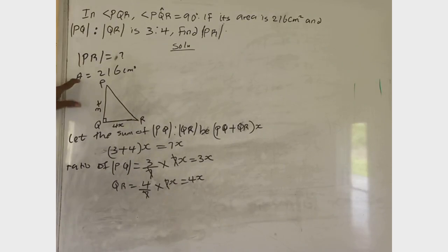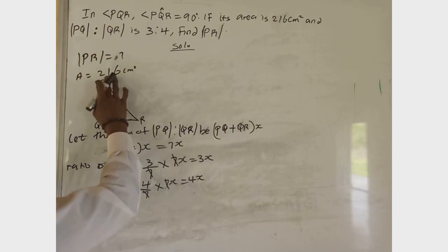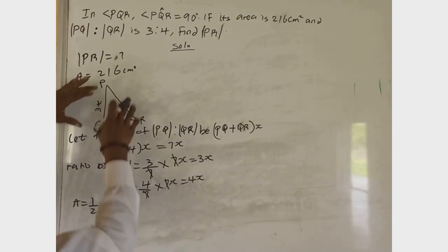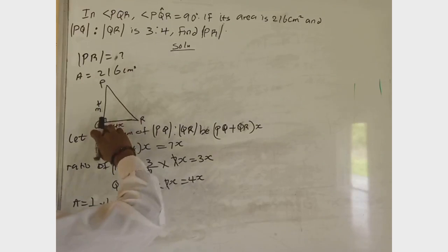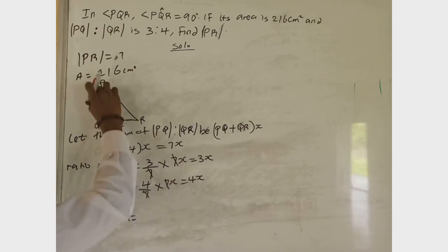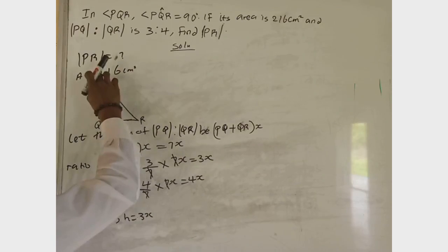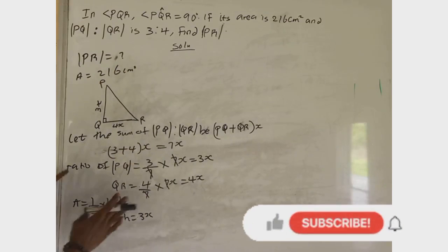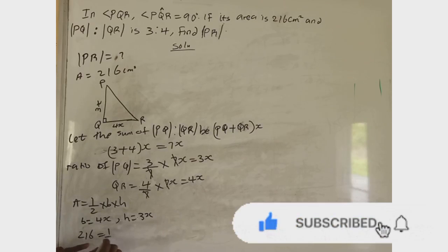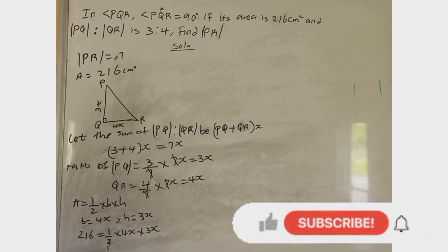We are given that the area of the right triangle equals 216 cm². The formula is: area equals ½ times base times height. Here our base B equals 4S, our height H equals 3S, and our area A equals 216 cm². Substituting: 216 equals ½ multiplied by 4S multiplied by 3S. Two can go into 4, giving 2. So we have 2S times 3S, that is 6S².